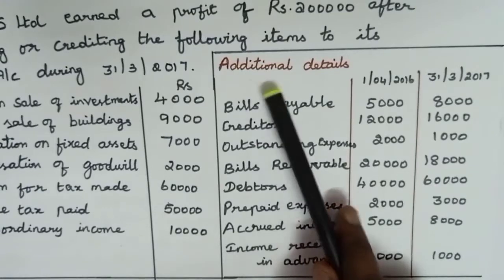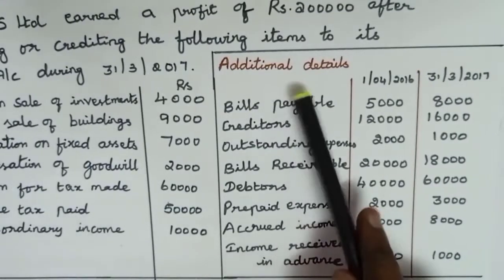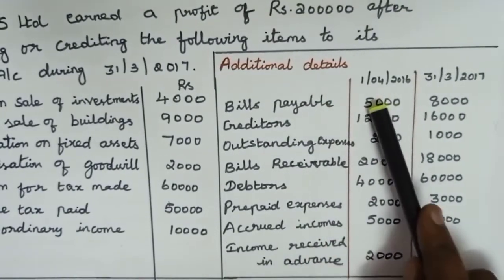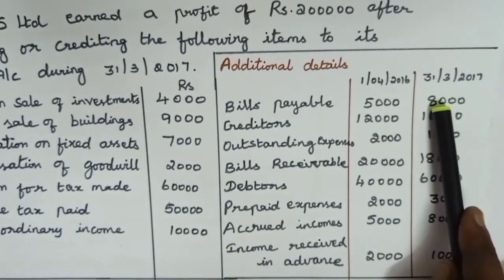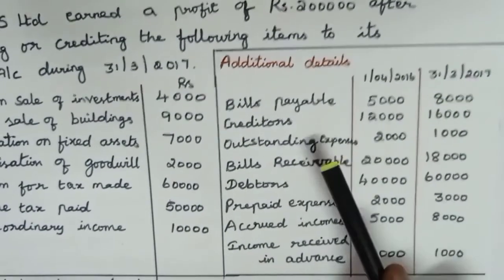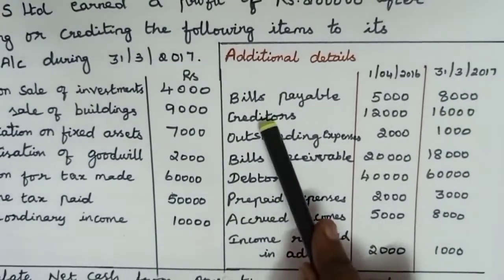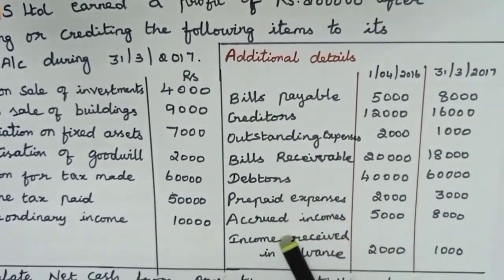Additional details: opening and closing information is given. All these details are related to current assets and current liabilities.